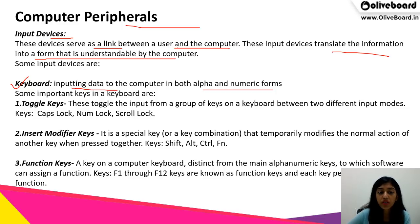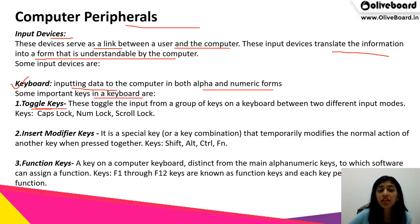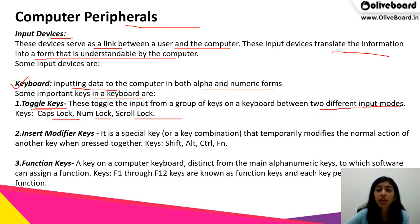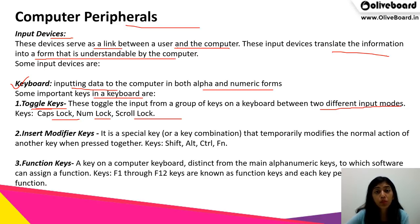Some of the important keys on the keyboard are, first, toggle keys. Toggle keys switch the input from a group of keys on a keyboard between two different input modes. For example, Caps Lock, Number Lock, or Scroll Lock. When we put Caps Lock on, the function of a particular key changes — the letters that we type will be in caps mode.